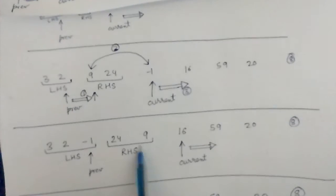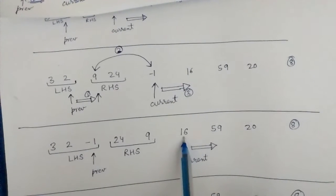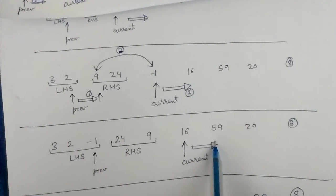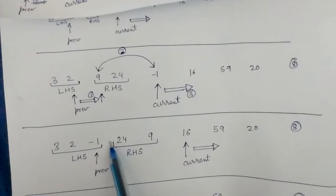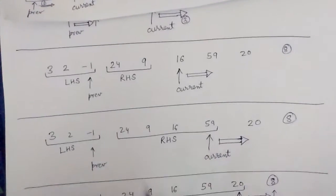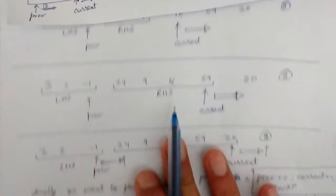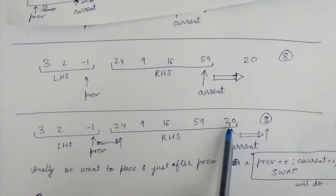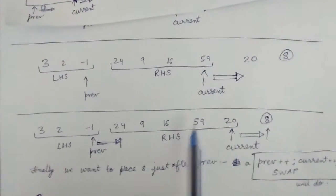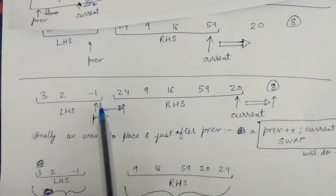The two RHS elements are 9 and 24. Current is now at 16, which is still greater than 8, so we do current plus plus and the size of RHS expands by one. Similarly, 59 is greater than 8, so current plus plus again and the size of RHS expands by one.